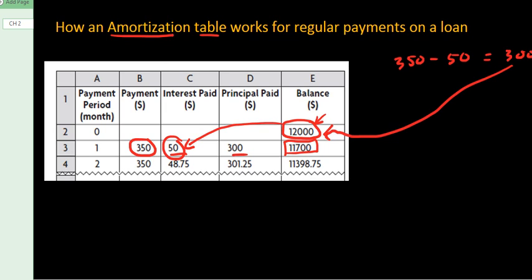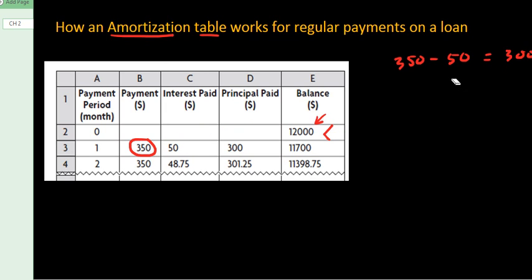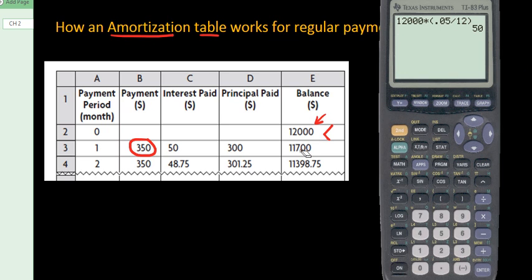This is where it starts to get interesting. The next line here — this interest rate actually gets charged on what's remaining. So now it's $11,700 because we have $300 taken off, times 0.05 divided by 12, and that is $48.75.